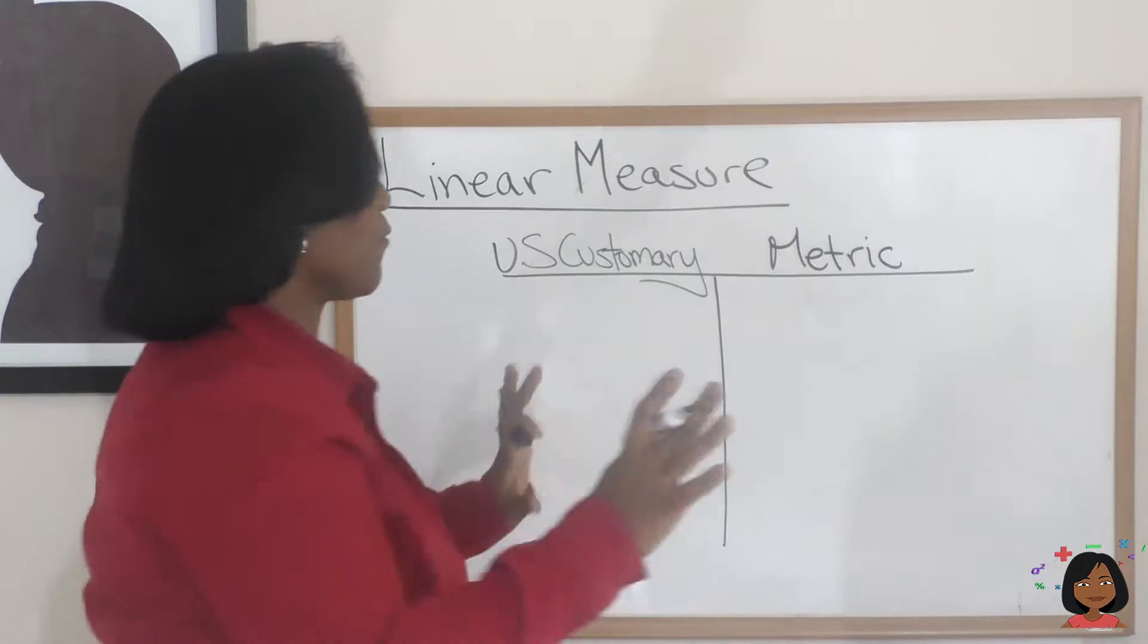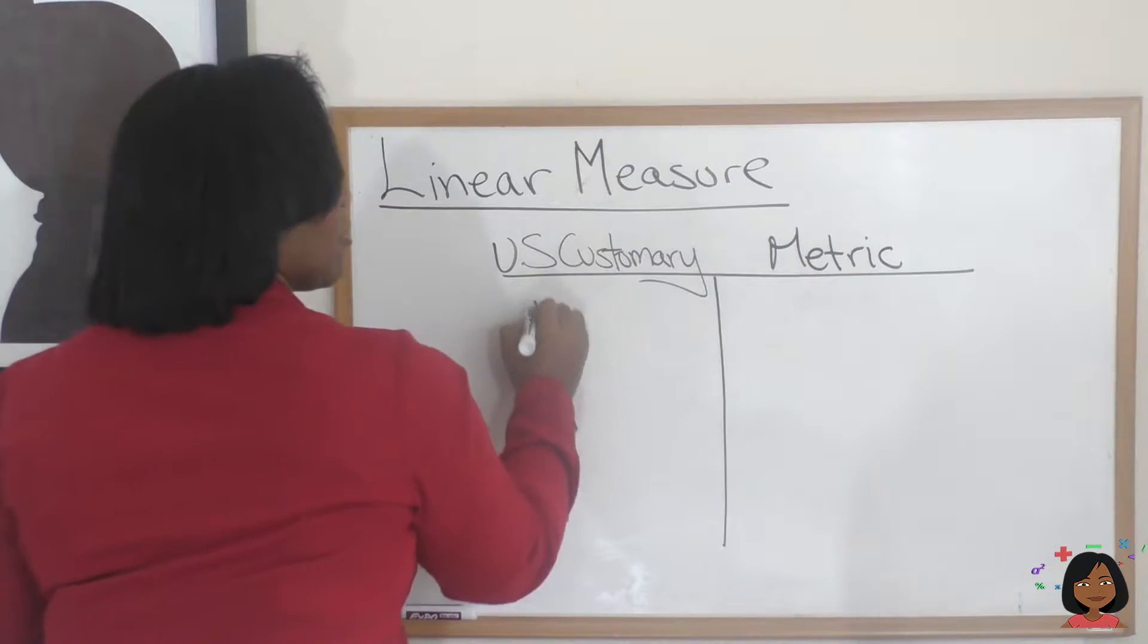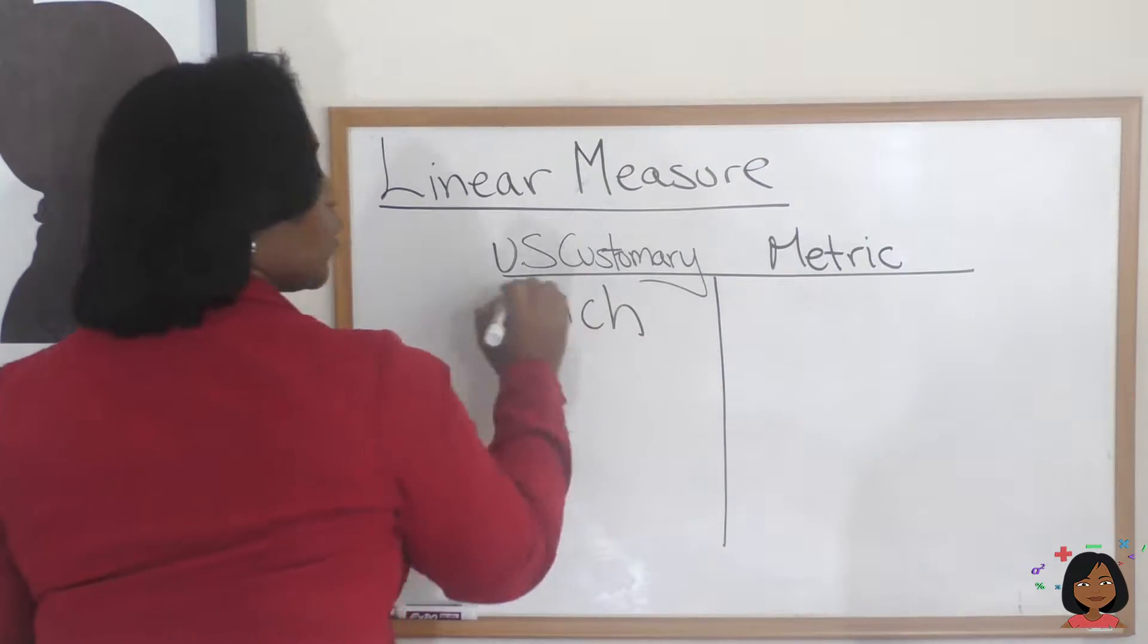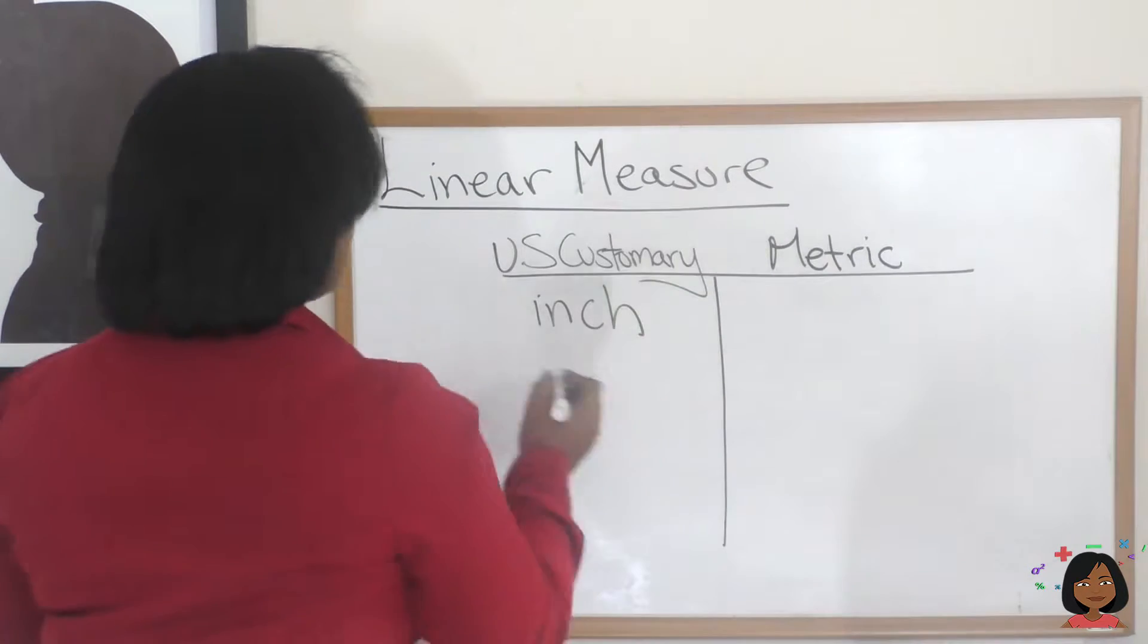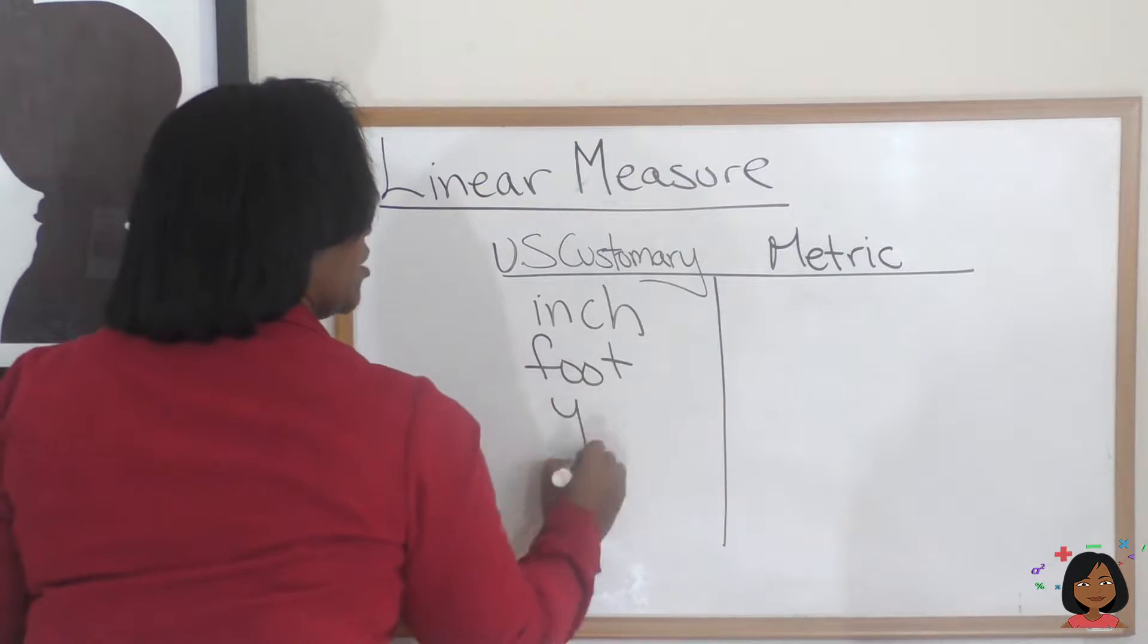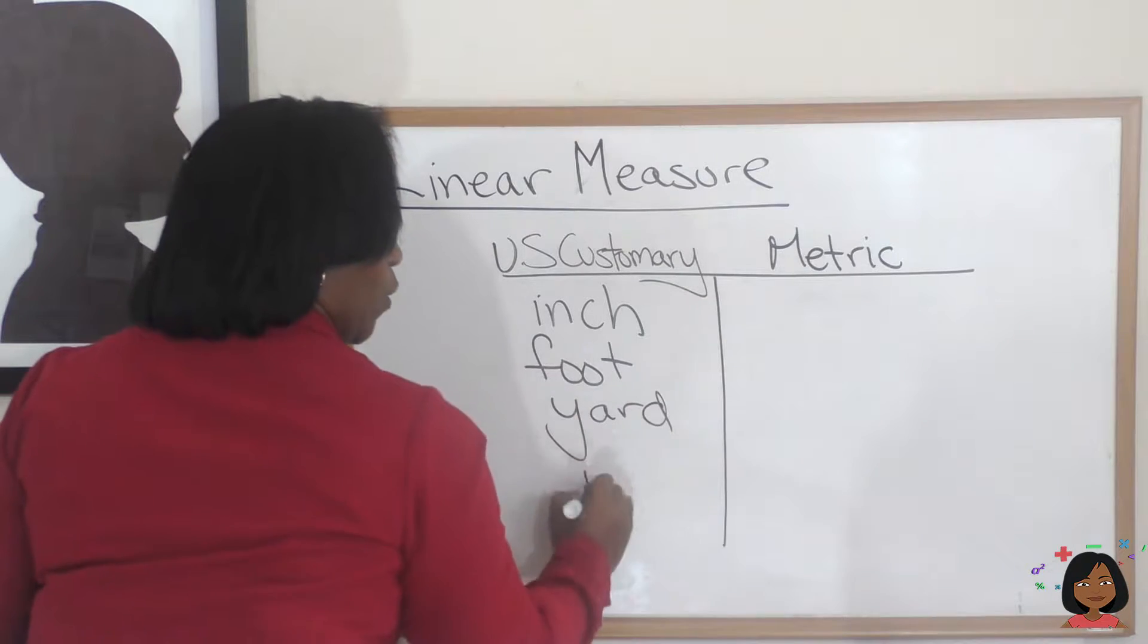Here are some of the terms that go for each. So with the US customary system, you're used to seeing words like inch, foot, yard, or mile.